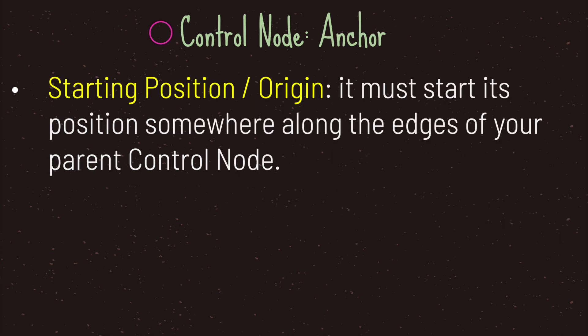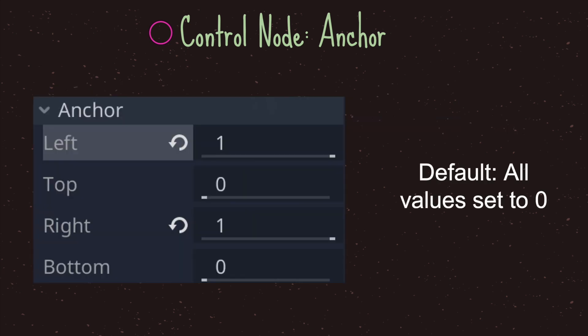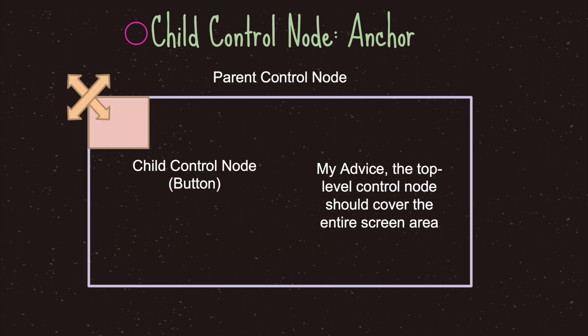You can think of the anchor as the starting position of your control node. Anchor is affected by your parent control node, and basically with anchor you are deciding where along the edges of your parent control node you would like the position to start. When you expand the anchor in the inspector you'll have four property values: left, top, right, and bottom — by default all set to zero, with values between zero and one.